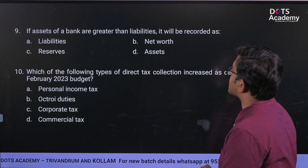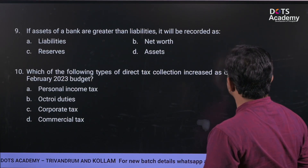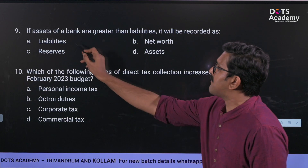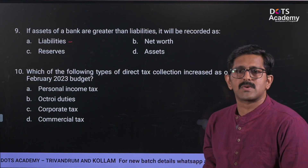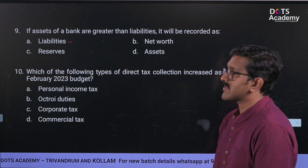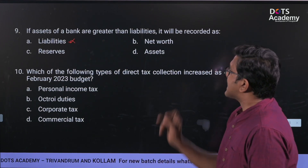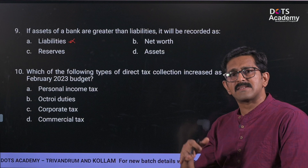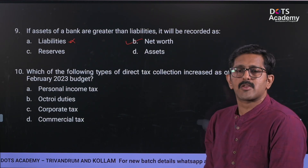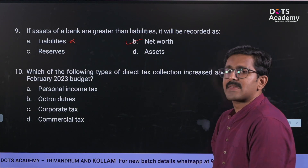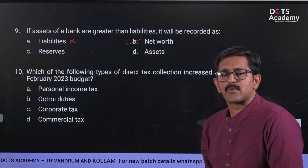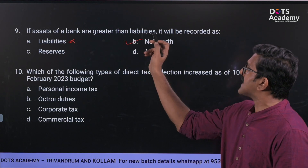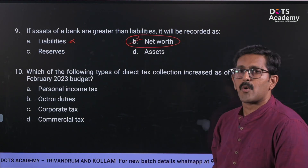If assets of a bank are greater than liability, what will be recorded? Liabilities of the bank include savings accounts and deposits. If assets are greater than liability, the correct answer is net worth. Net worth represents the bank's reserves when assets exceed liabilities. CRR (Cash Reserve Ratio) and SLR (Statutory Liquidity Ratio) are also related concepts, but net worth is the correct answer here.